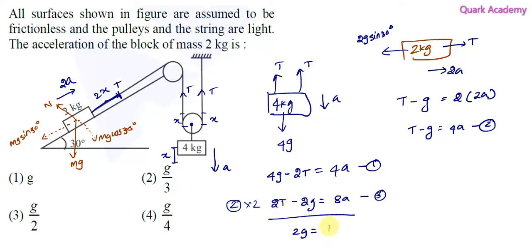We'll get 2g equals 12a, so a becomes g/6. But what we need is the acceleration of the 2 kg mass, which is 2a. So 2a equals 2 times g/6, which is g/3. Therefore, the acceleration of the 2 kg mass is g/3.